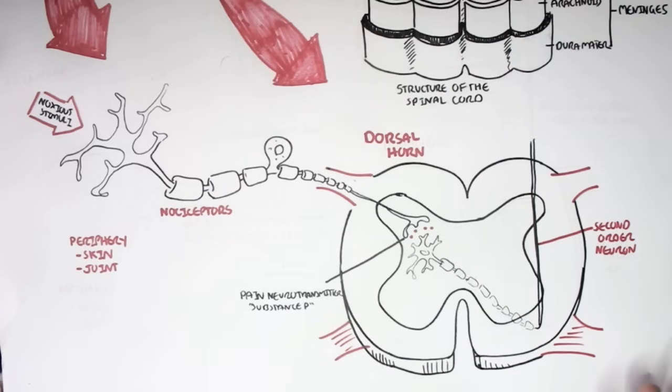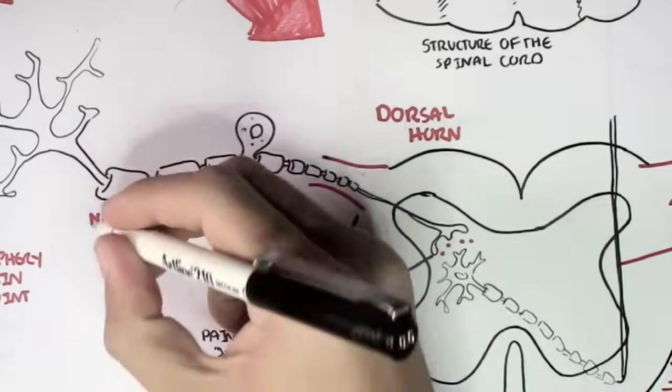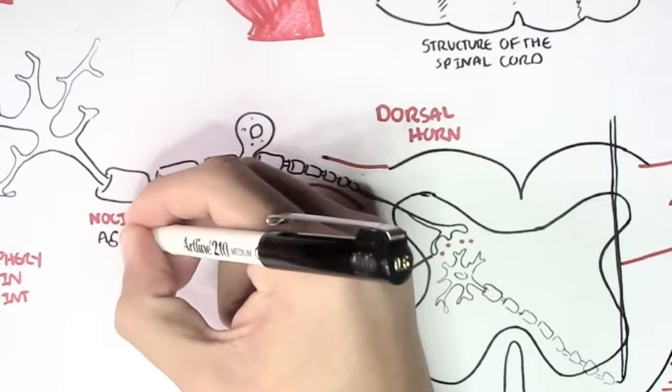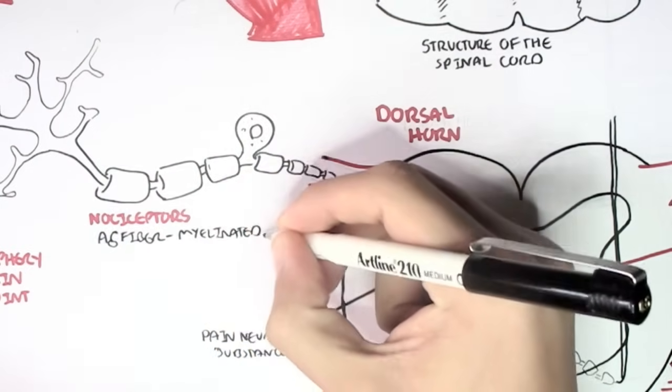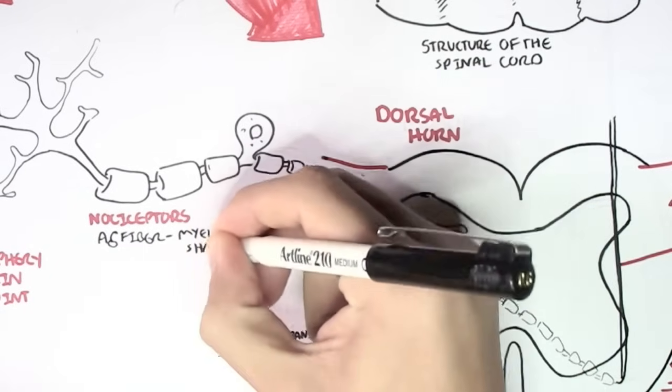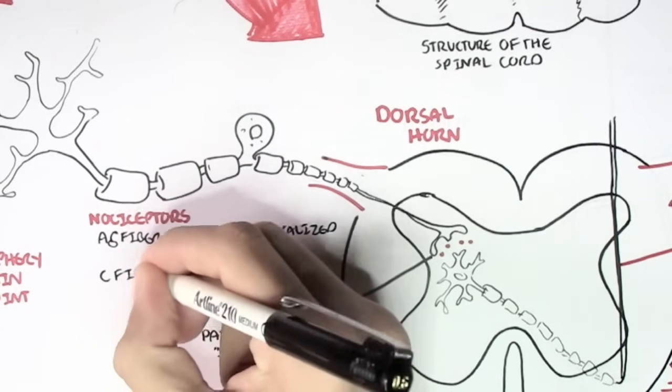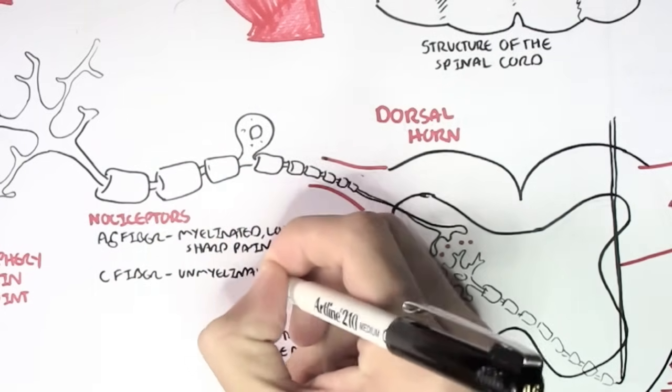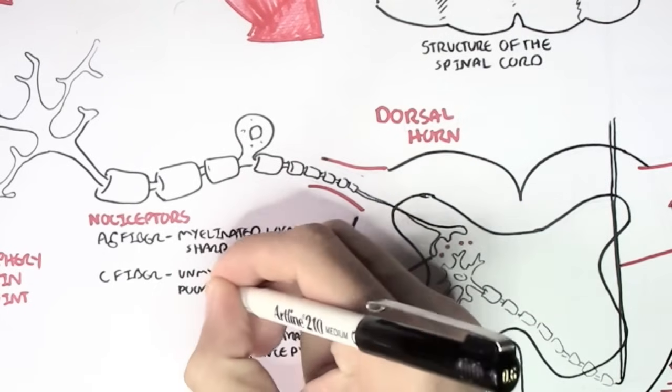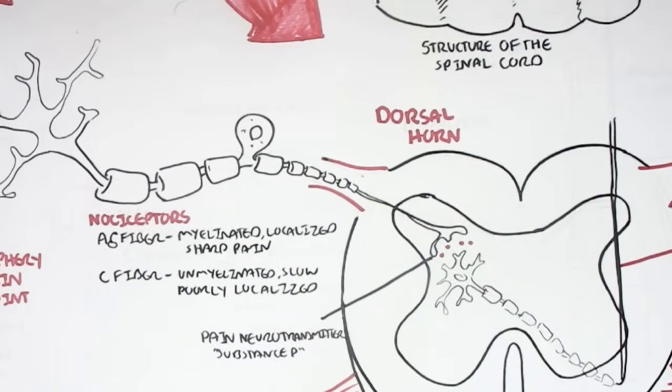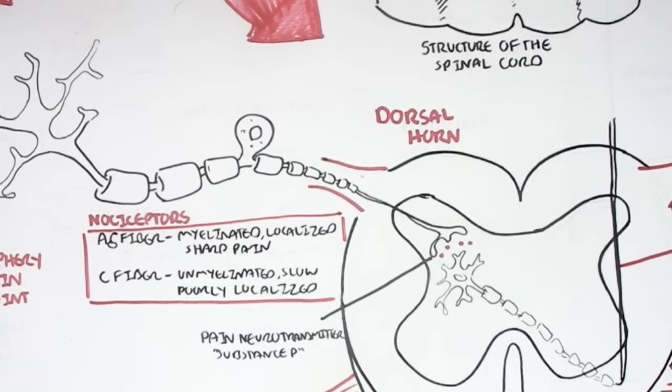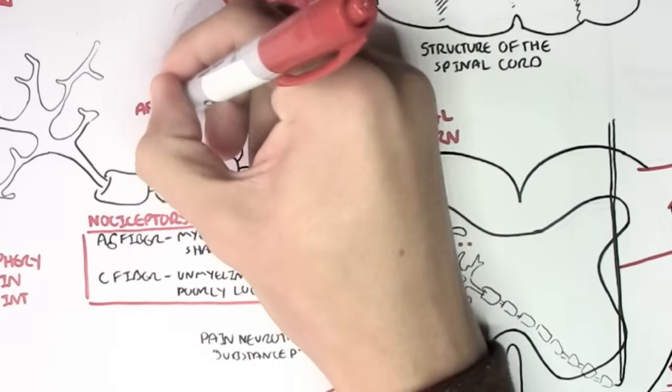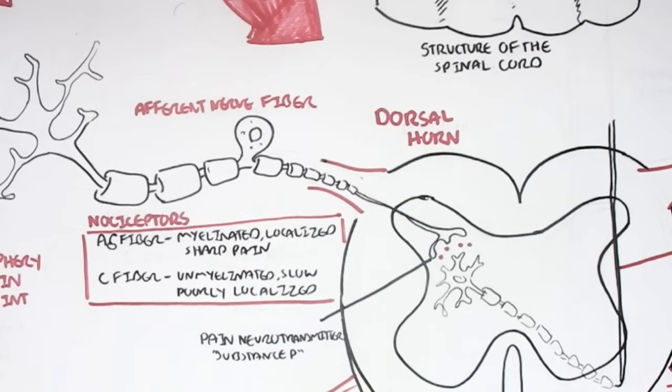Now before continuing on with this second-order neuron, we must understand that there are actually two types of nociceptors. The first is the alpha-delta fibres. These are very small myelinated nerve cells that produce fast, well-localized, sharp pain. Then you have the C fibres, which are smaller and are unmyelinated and produce slow, poorly-localized pain. The C fibres are the fibres that produce the burning type, throbbing pain that some people have experienced. The nociceptors can also be referred to as the afferent nerve fibres because it is bringing information into the spinal cord, to the second-order neuron.